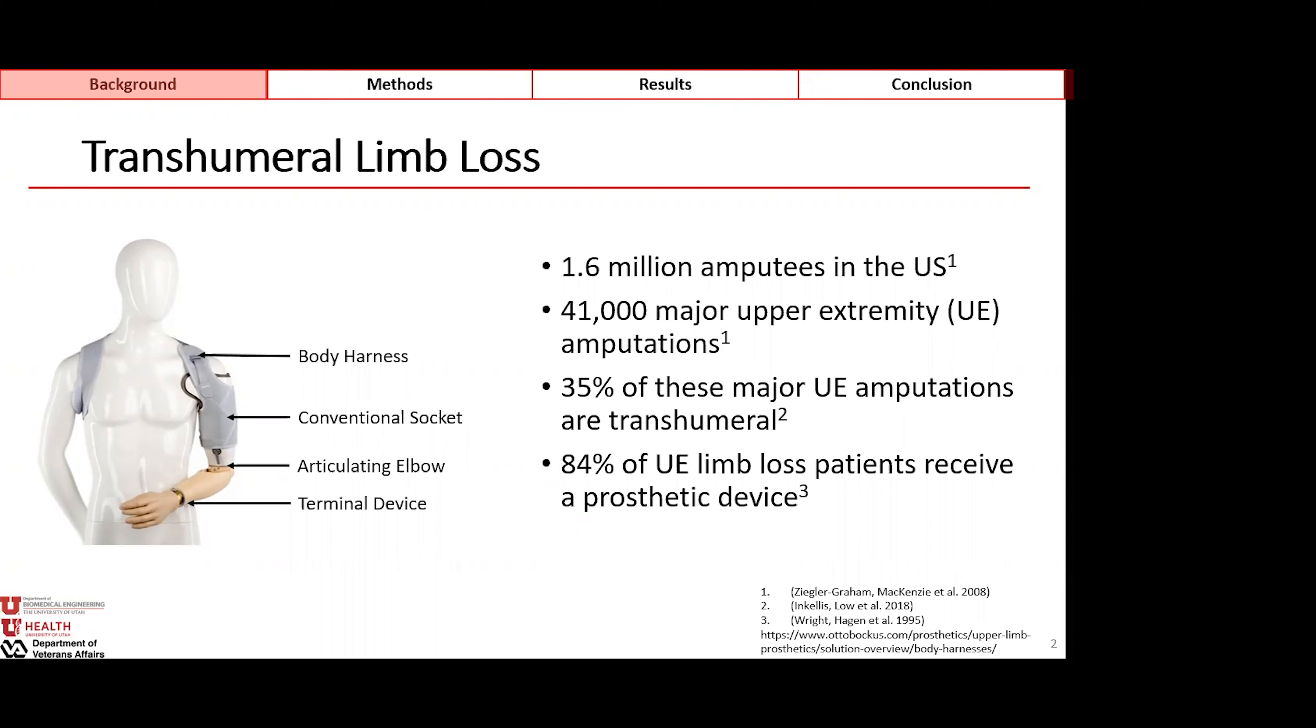The socket will then be stabilized by some type of body harness that goes around to the contralateral shoulder, and this body harness is used to both stabilize the device in axial and torsional loading situations, as well as to help with articulation of the elbow through postural changes. The terminal device will vary from patient to patient based on needs and desires, and it can be something as simple and lightweight as a cosmesis or something as incredibly complex and relatively heavy, such as the Luke arm.